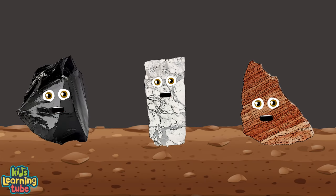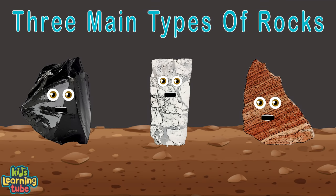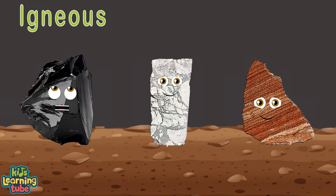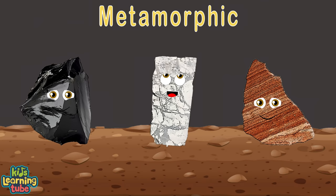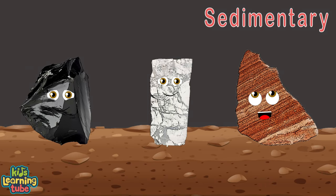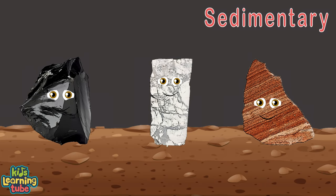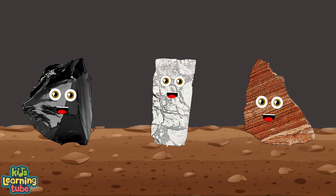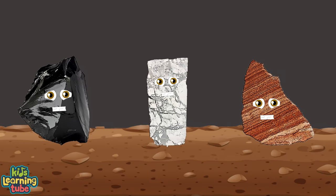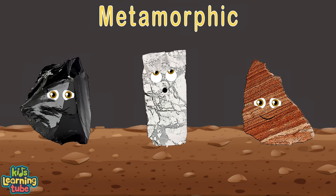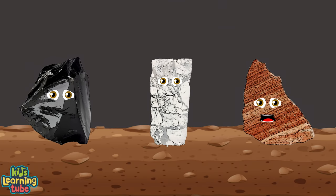There are three kinds of rocks on Earth you will see: igneous, metamorphic, and sedimentary. Our world is full of these rocks on land and in the sea. Igneous, metamorphic, and sedimentary.